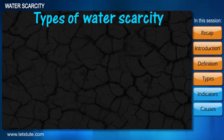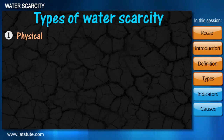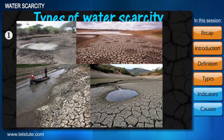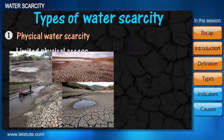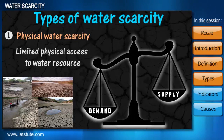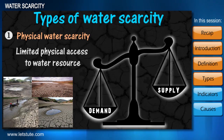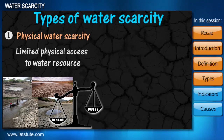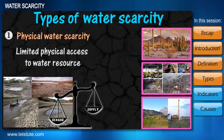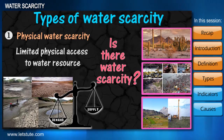Water scarcity could be of two different types. The first is physical water scarcity — it is exactly how it sounds: there is limited physical access to water resources. When the demand outstrips the land's ability to provide the needed water, you have physical scarcity. Here are three situations — identify whether there is water scarcity or not.